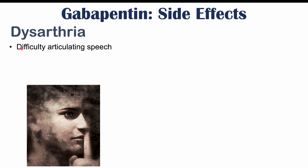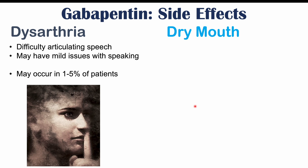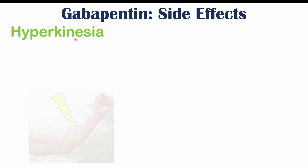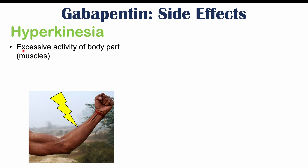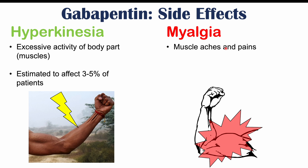Dysarthria — difficulty articulating speech — may occur in approximately 1 to 5% of patients. Dry mouth, due to reduced activity of the salivary glands, can also occur in 1 to 5% of patients. Hyperkinesia — excessive activity of body parts, particularly the muscles — can accompany the tremors discussed earlier, occurring in approximately 3 to 5% of patients. Myalgias, or muscle aches and pains, can also occur in 1 to 5% of patients.